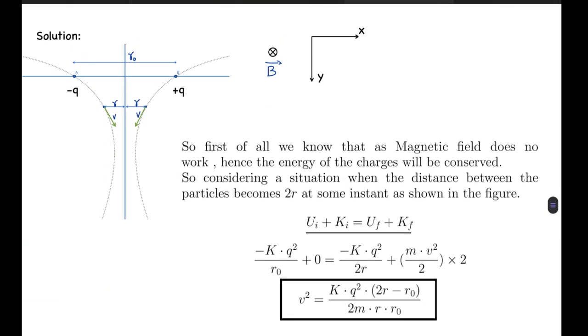First of all, we know that as the magnetic field does no work, hence energy of the charges will be conserved. So considering the situation when the distance between the particles becomes 2r at some instant, as shown in the figure. In the figure I have shown that the initial distance between the charges was r naught.